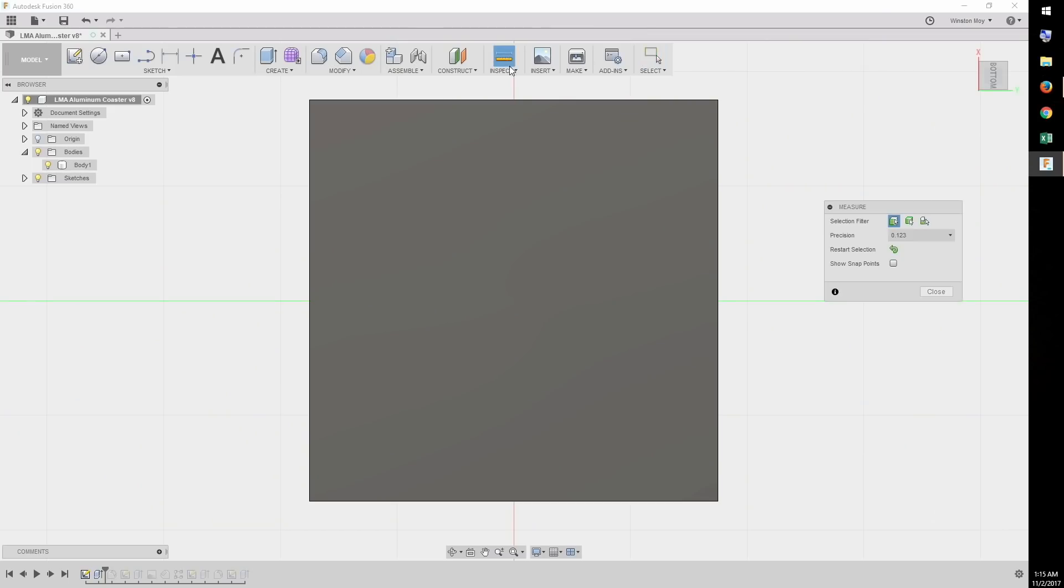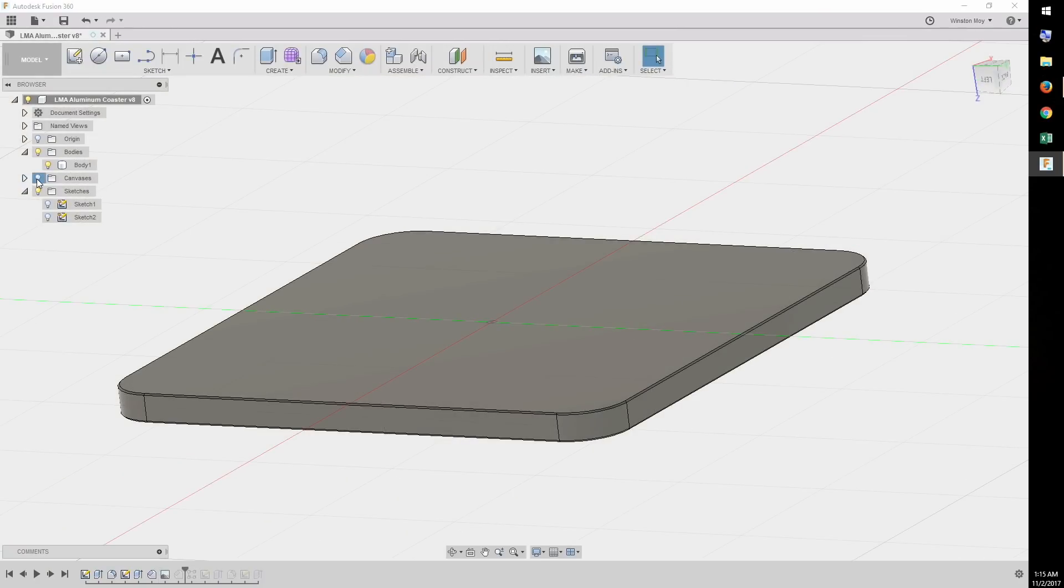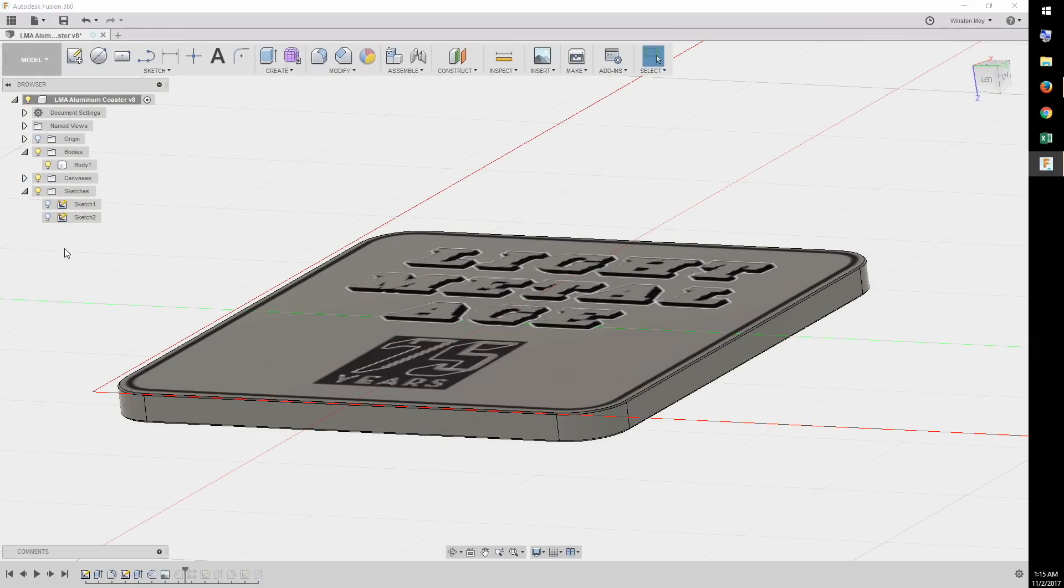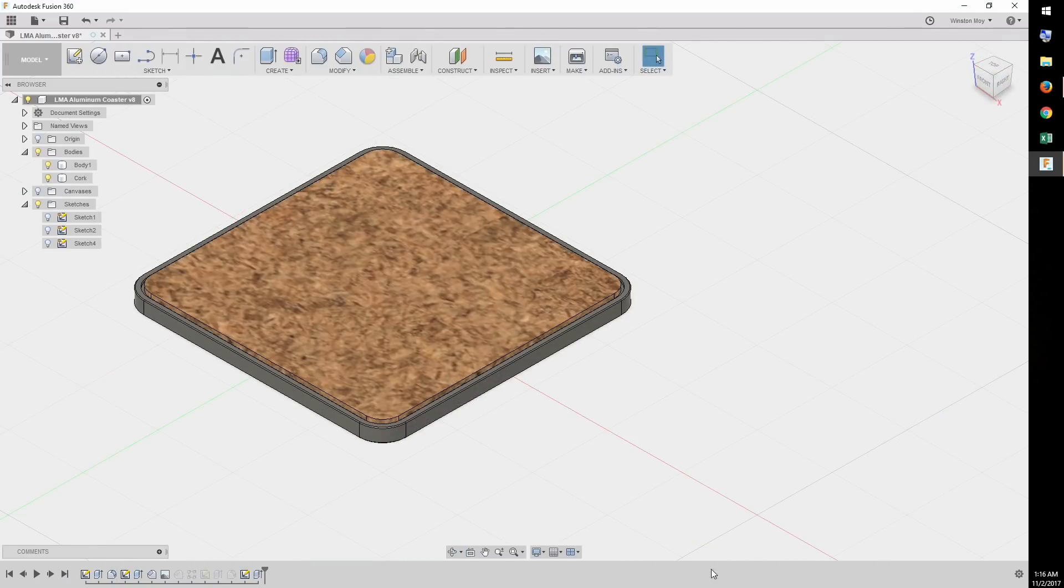The requirements for the coasters were laid out as follows: 3.5 inch square overall dimensions, rounded corners, beveled edges, clear anodize over a brushed aluminum finish, a permanently engraved graphic on the face with a noticeably tactile contrast, and a cork lining on the bottom. All doable, but the kicker was that they wanted 150 units and they needed them by mid-October.